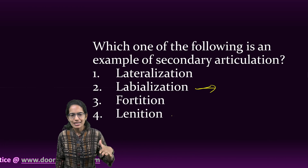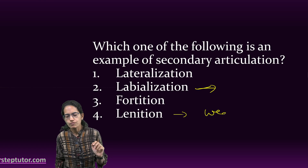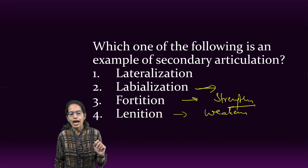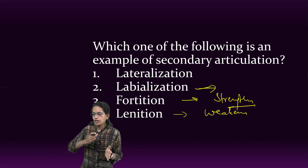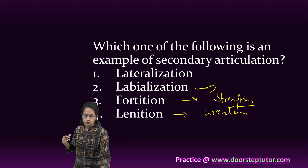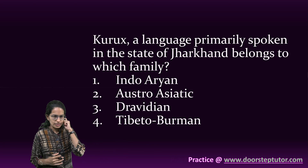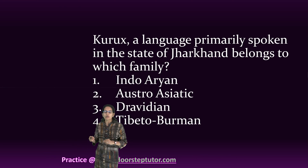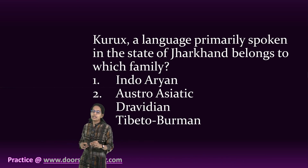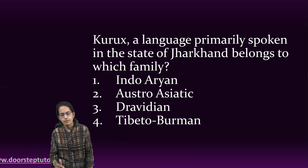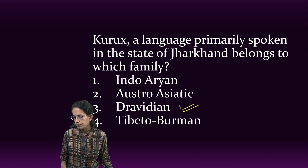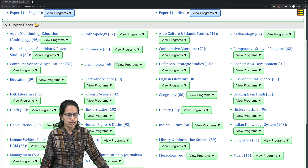Lenition means being lenient — there is a weakening of consonant sounds. Fortition means there is a strengthening of these sounds. Literization refers to an internal process that takes place within the word. Additionally, Kurukh, which is also known as Kisan, is a language spoken in the regions of Jharkhand and belongs to the Dravidian family. Those were some of the questions from the 2023 linguistics paper.